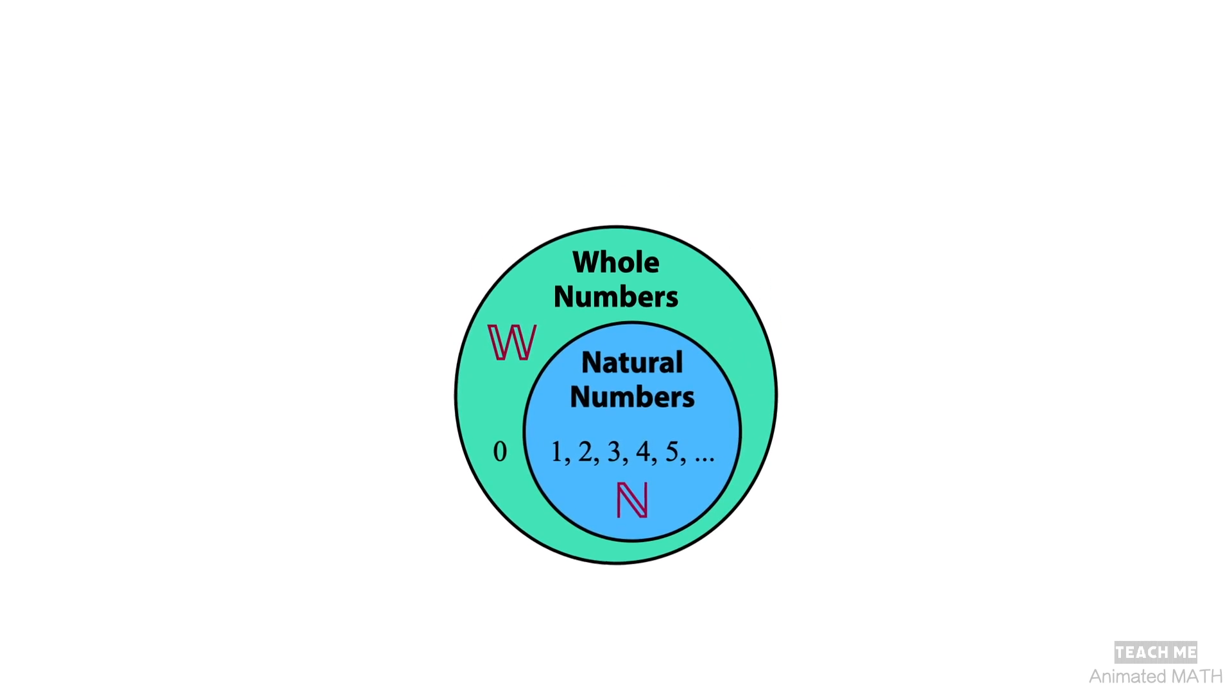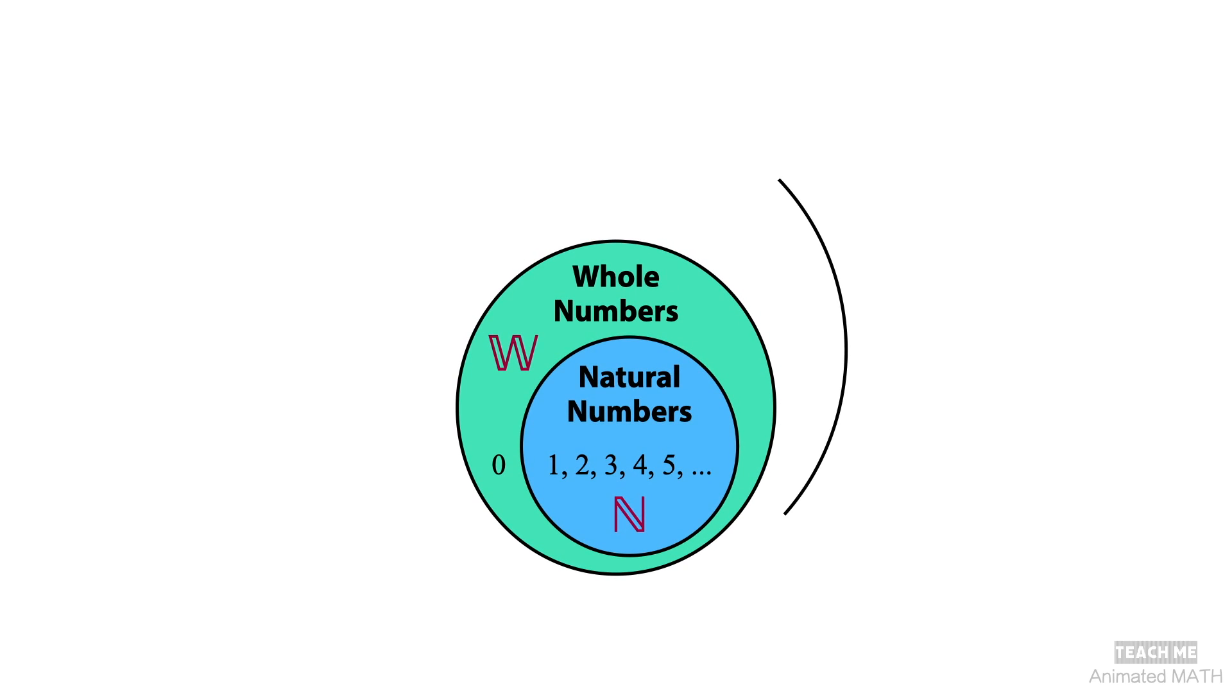And then, as we grow older, we learn about negative numbers. These negative numbers plus the set of whole numbers now form the set called integers. The symbol for this set is a big, bold Z.